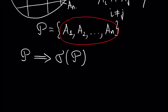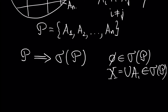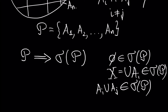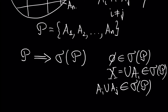We can add the empty set to this sigma algebra — the empty set will be in this sigma algebra. Of course, the whole set X, which is the union of all ai's, will also be in this sigma algebra. And for any two sets, the union of these two sets will be in this sigma algebra. This sigma algebra is called the sigma algebra generated by our partition.